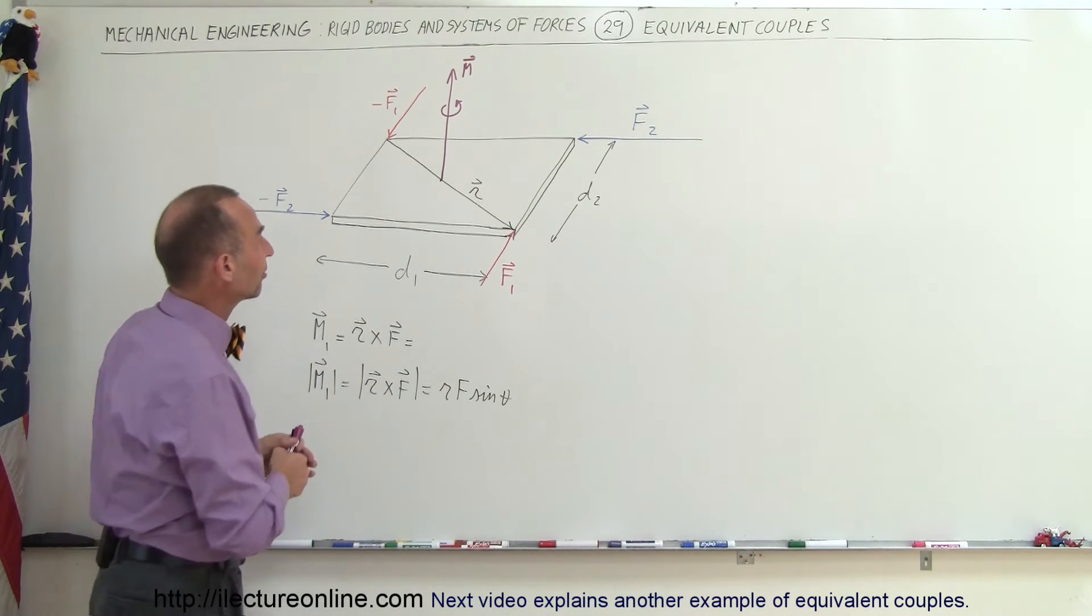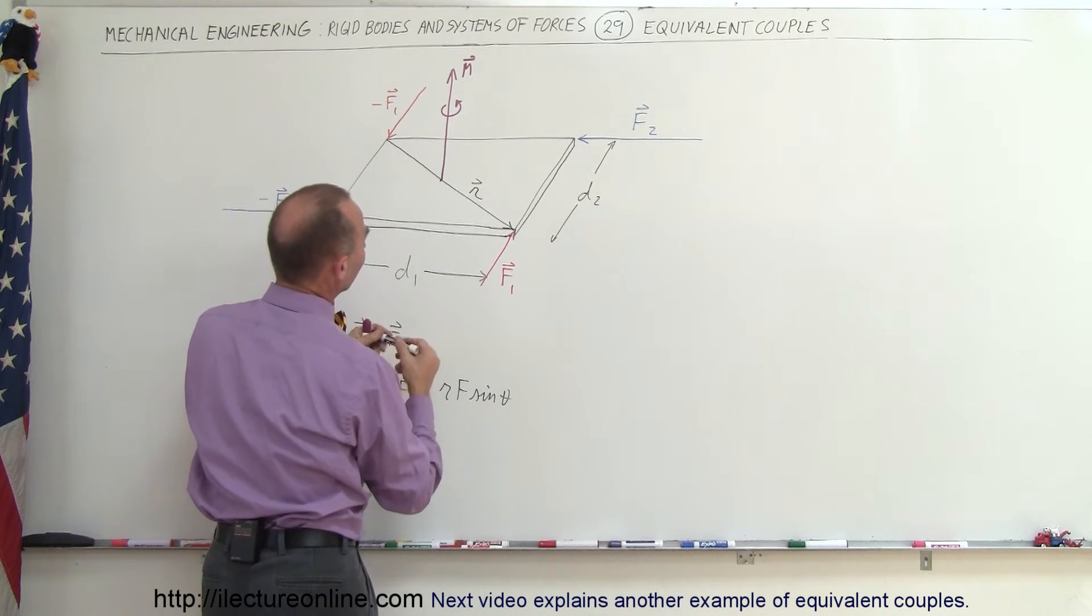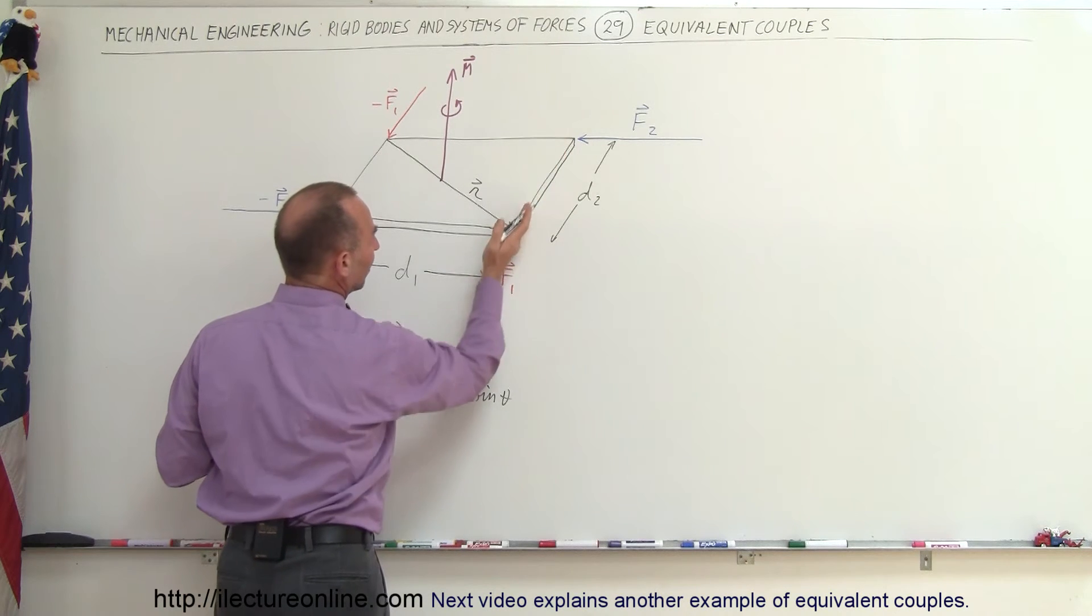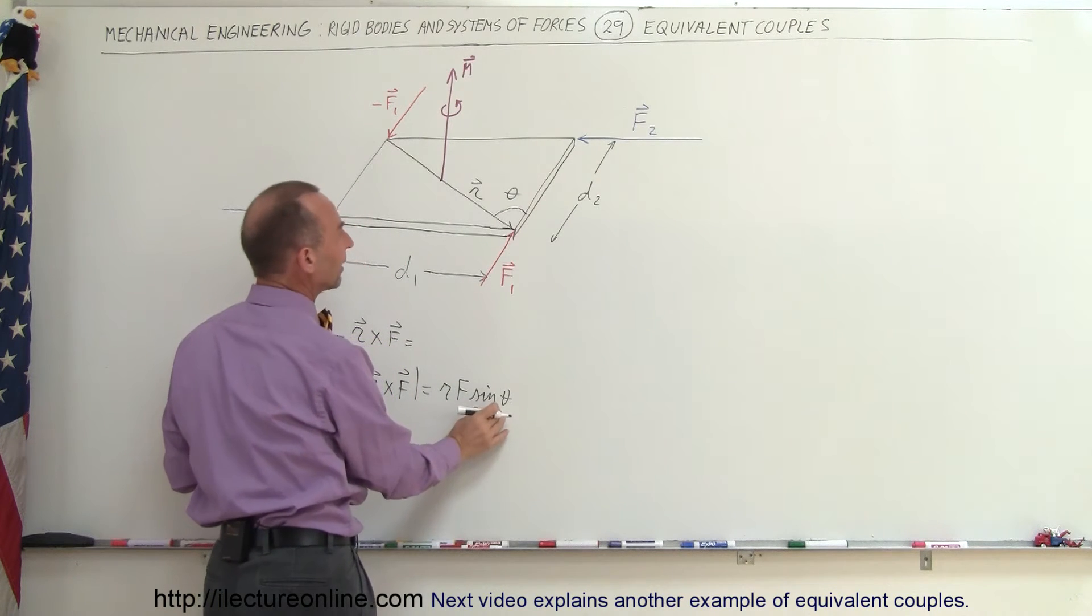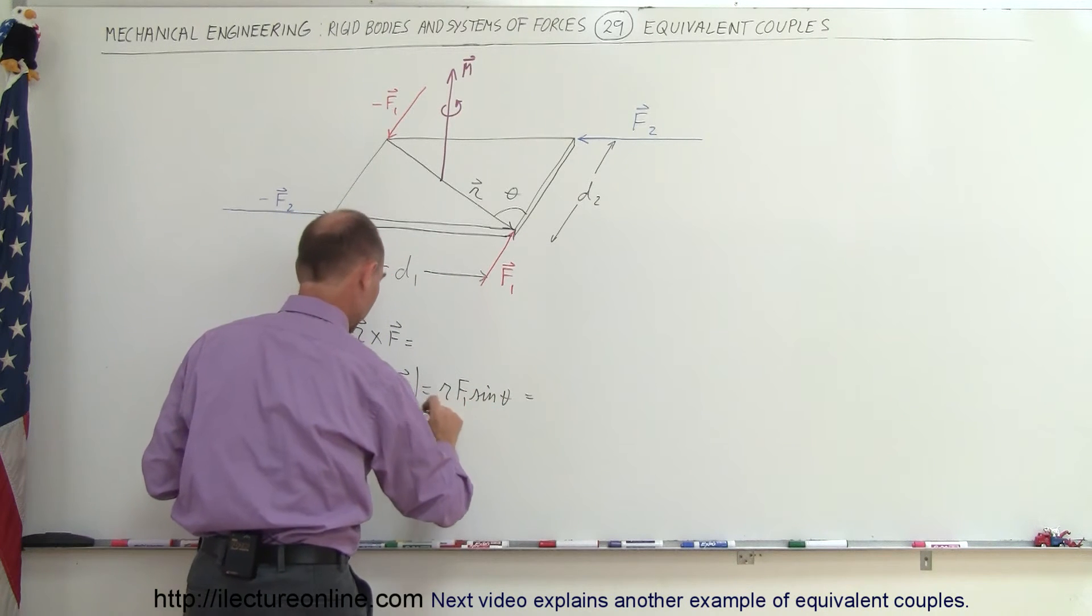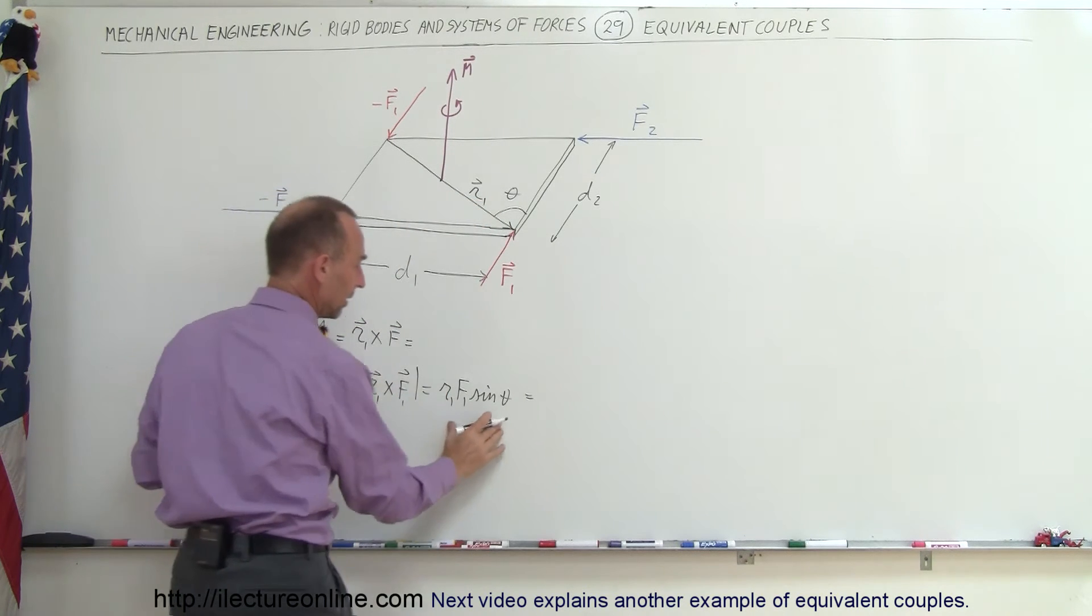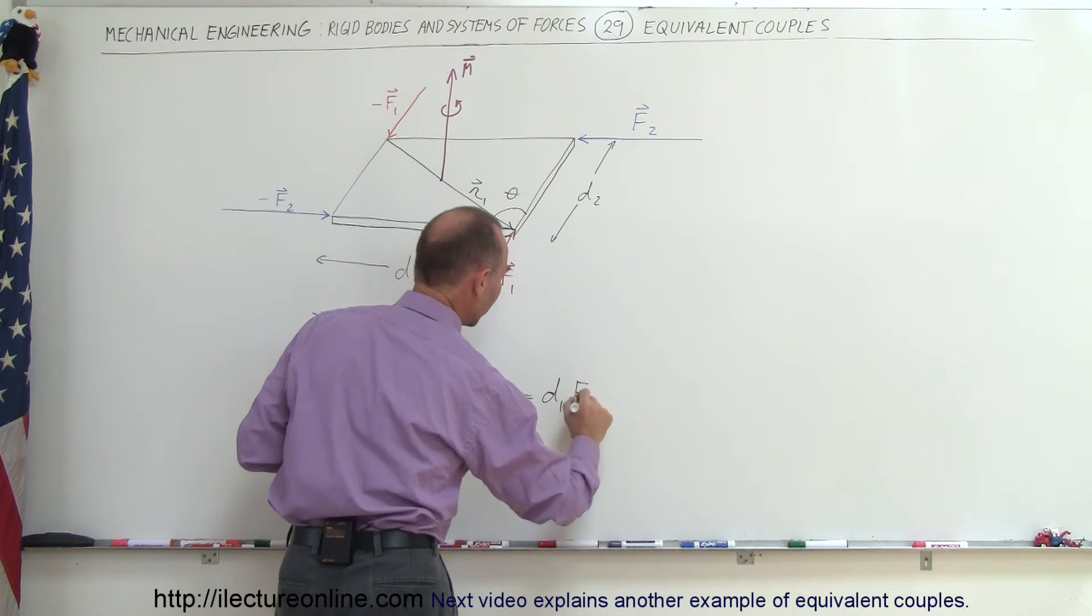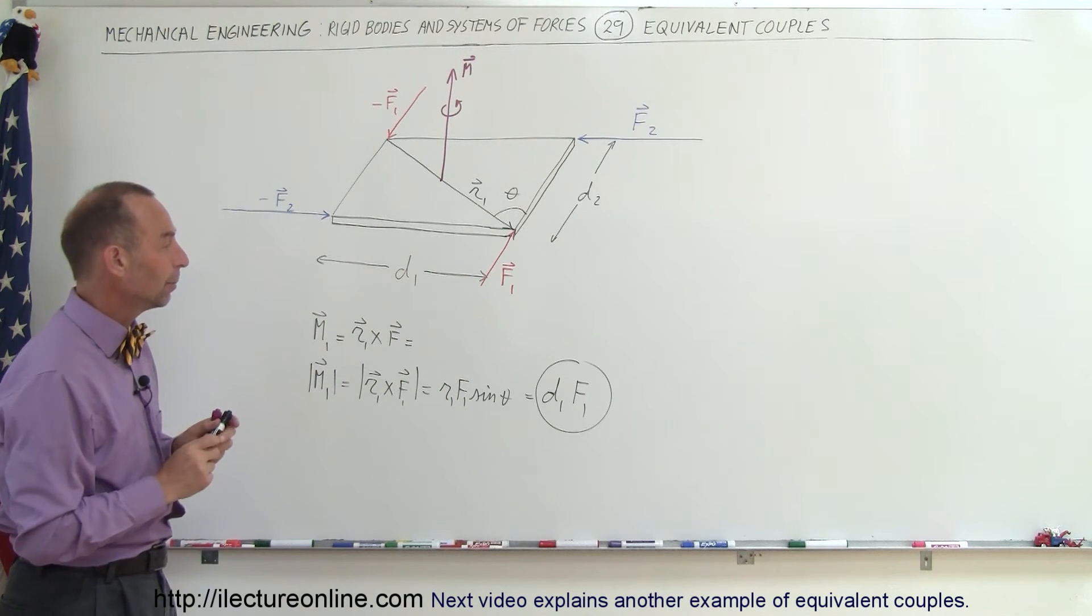Now, R times sine of theta is actually equal to the distance between the two. So D1 is actually R times the sine of theta. Since F, this is the line of action of the force, this here would be called theta. We can say that R times the sine of theta is equal to the distance between the two. Let's call this R sub one. So this would be equal to D1 times the force, which would be the magnitude of the moment of that particular couple.